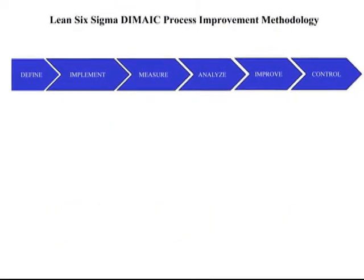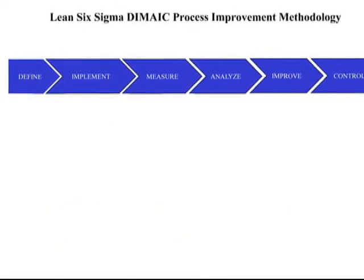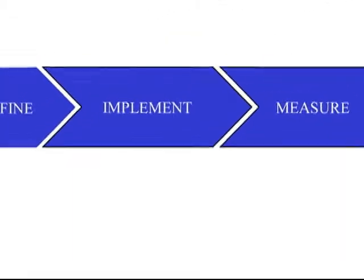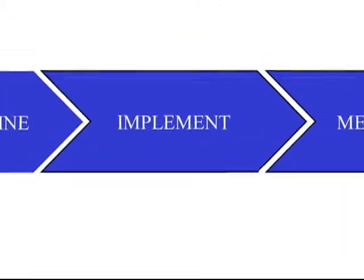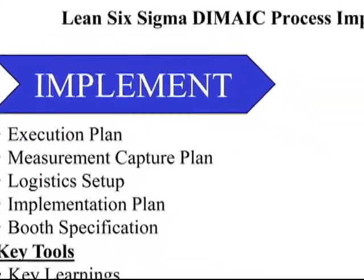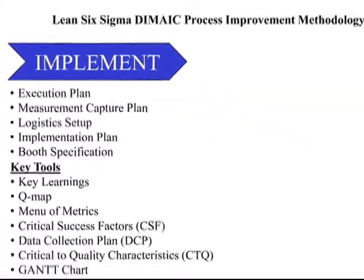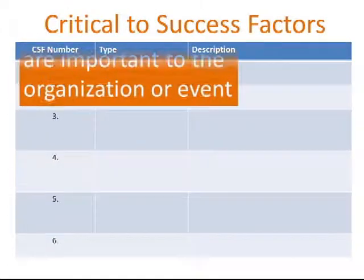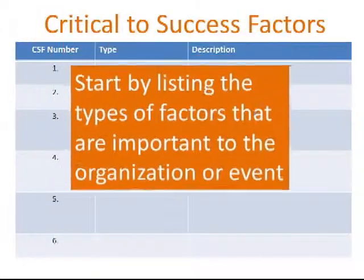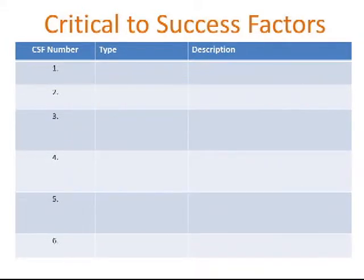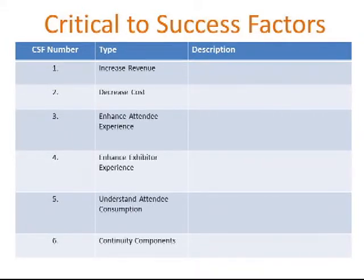During the implement phase, it's fundamental that the team understands what factors will determine successful execution at the show. This is essential because the measurements that are captured must correlate to success factors, or else there's no need to capture them. This will become more apparent in the next tool set, which ties the items from the menu of metrics with the critical to success factors and produces a data capture plan.